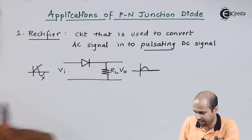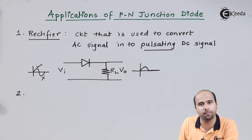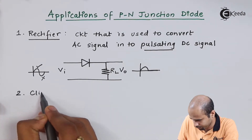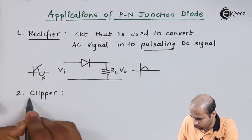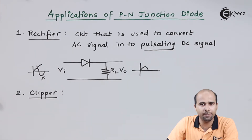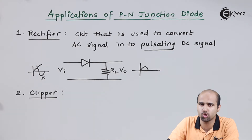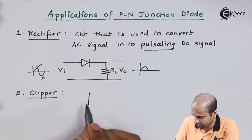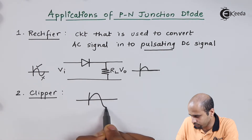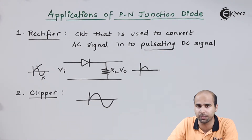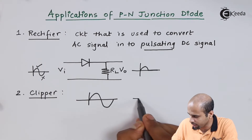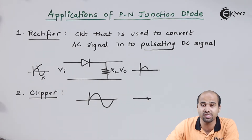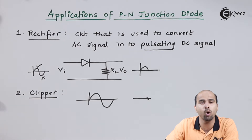Following the rectifier, another application we have to learn for the PN junction diode is clippers. The question arises: what is a clipper circuit? A clipper is a circuit which is used to clip off the voltage. For example, if I am applying an AC signal of plus 5 volts and minus 5 volts peak to peak, but at the output I don't want a signal more than 4 volts, then above 4 volts the signal will be clipped off.